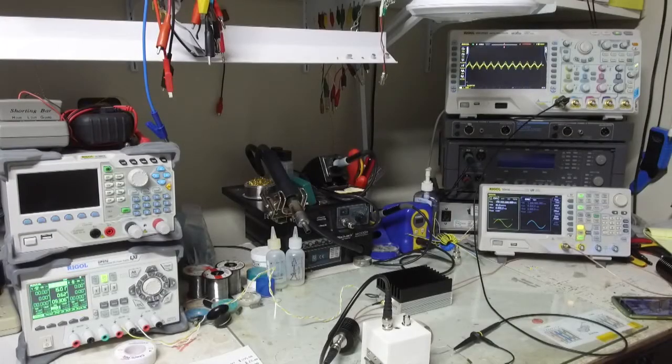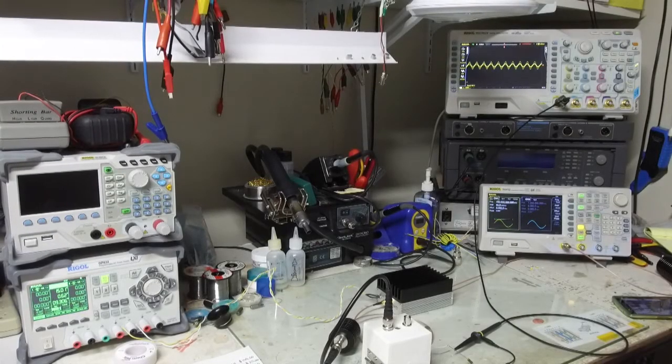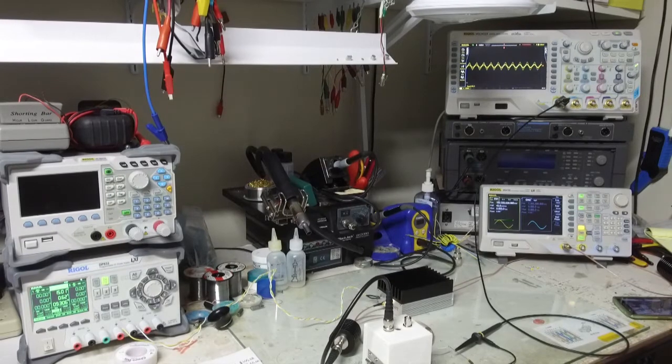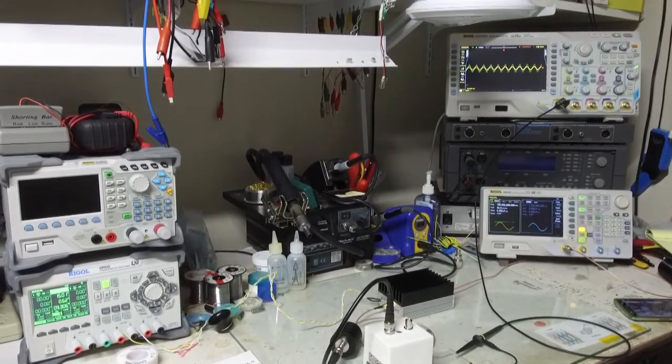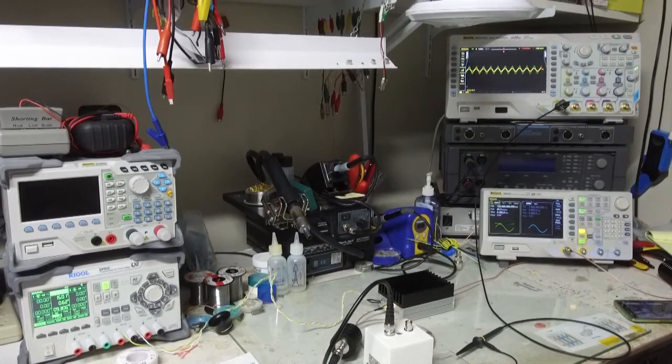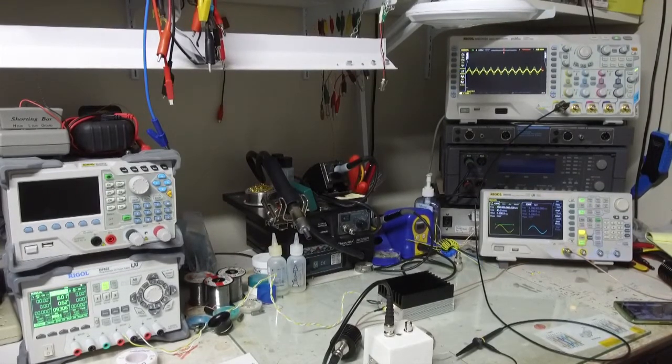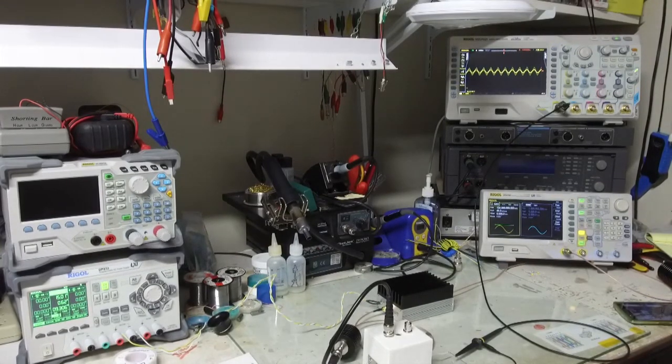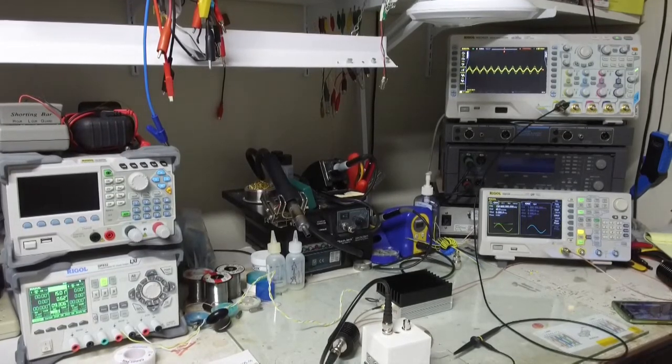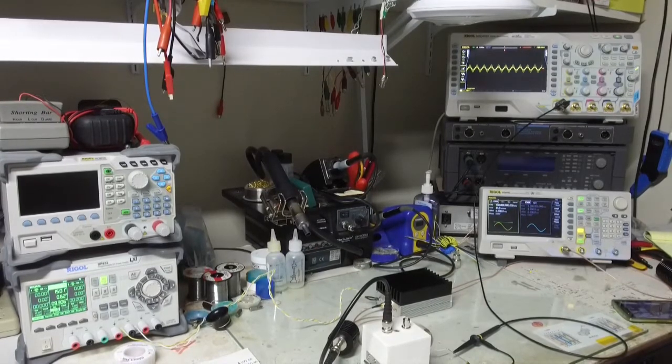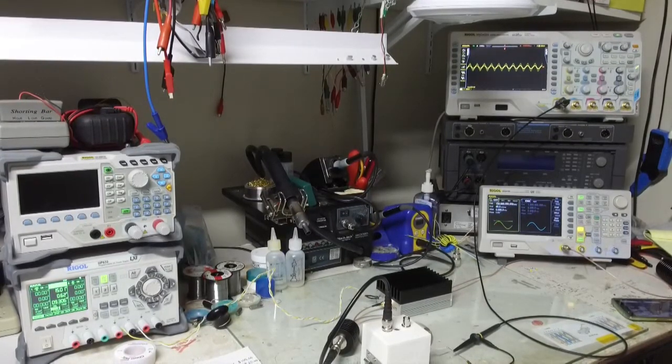Hello. This is a quick video to explain immunity to conducted disturbances testing. This is specifically the EN IEC 61000-4-6 specification that pretty much all electrical devices will need to pass if you want CE certification.